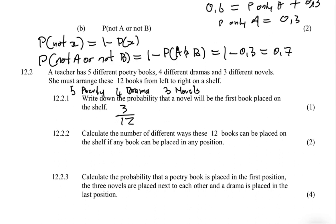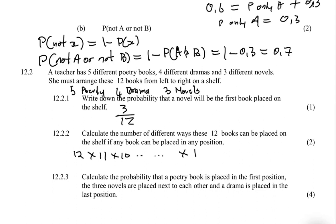Question 12.2.2 asks: calculate the number of different ways these 12 books can be placed on the shelf if any book can go in any position. When she picks the first book she has 12 options, the second book 11 options, the third 10, and so on until she's left with one book and one option.